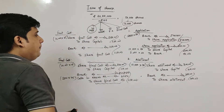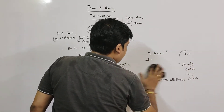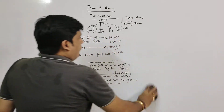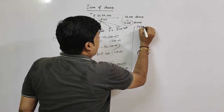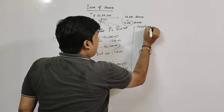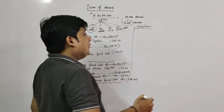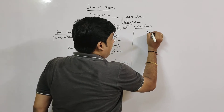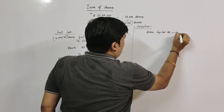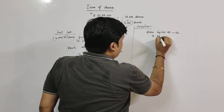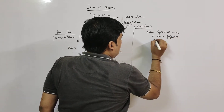Now, when a shareholder doesn't pay, the company's option is forfeiture — the company will seize those shares. In forfeiture, the company does two things: it seizes the shares and keeps the money already paid. The forfeiture entry is: Share Capital Account Dr. to Share Forfeiture Account and to Calls-in-Arrears Account.